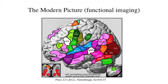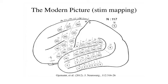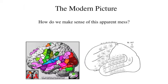The modern view is more complicated. This is a map of regions implicated in language processing using functional imaging — a good chunk of the brain. Another method, cortical stimulation mapping, stimulates cortex and looks for language-related effects. The numbers correspond to cases where something happened upon stimulation of those areas. So it's not just Broca's and Wernicke's area, but this doesn't mean the picture is a complete mess.